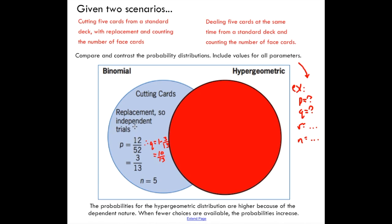Because we have replacement, we have independent trials. One of our parameters, probability of success, there are 12 face cards in total, 52 cards in the deck. A probability of a success would be 3 out of 13. As a result, the probability of a failure, Q, would be 1 minus our success. We get 10 out of 13. So our n value would be 5. We're dealing out with 5 cards. That's really all I want to look at for binomial distribution.